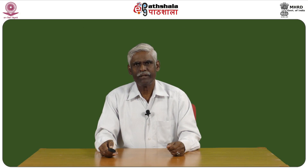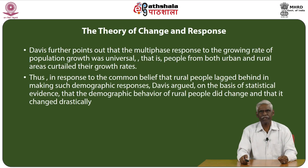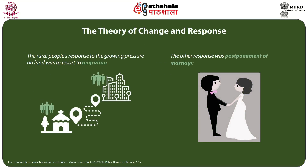According to Kingsley Davis, this was the reason why people modified their demographic behavior. Davis further points out that the multiphase response to the growing rate of population growth was universal — people from both urban and rural areas curtailed their growth rates. In response to the common belief that rural people lagged behind, Davis argued on the basis of statistical evidence that their demographic behavior did change, and changed drastically. The rural people's response to growing pressure on land was to resort to migration and postponement of marriage.